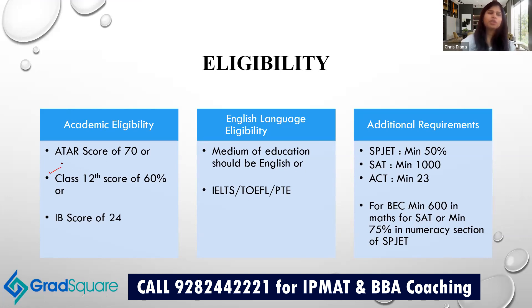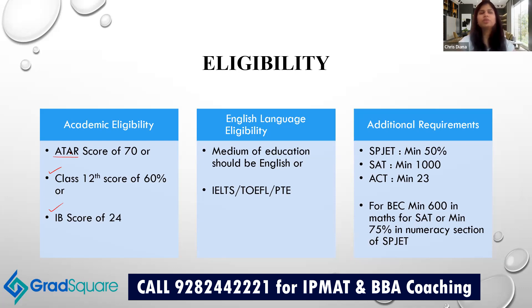For eligibility, you need a Class 12 or equivalent score of 60%. If you are an international student, you could have an IB score of 24, having taken a minimum of six subjects with three at Higher Level. Since this leads to an Australian degree, you are also given the privilege of submitting an ATAC score — the minimum eligibility is 70, meaning you must perform better than at least 70% of test takers.